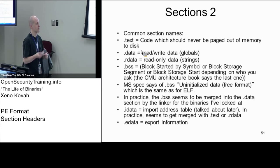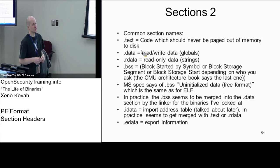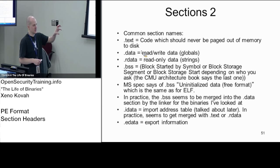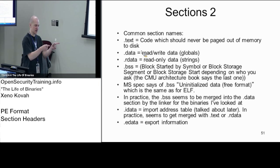.data is read-write data — global data, because normal variables are allocated on the stack within the context of a function and go away when the function goes away. But for your global data, that gets its own location in memory. That'll be read-write data. .rdata, or on Linux .rodata, is your read-only data. That's things like strings, which are globals that can be reused in multiple places but you don't want them to be writable.